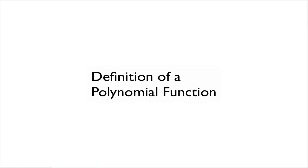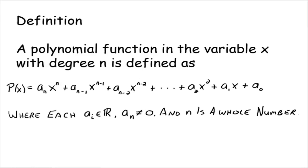Now we want to explicitly define a polynomial function. Here's the formal definition — it might look kind of ugly. A polynomial function in the variable x with degree n is defined as follows: P of x equals a sub n times x to the n, plus a sub n minus 1 times x to the n minus 1, plus a sub n minus 2 times x to the n minus 2, and we continue this pattern.